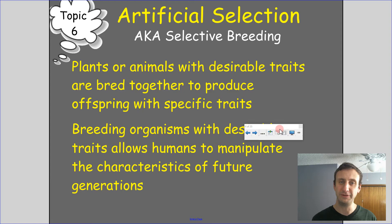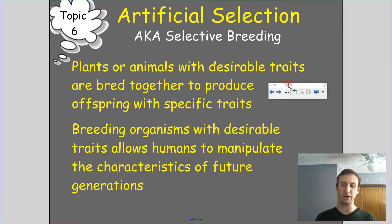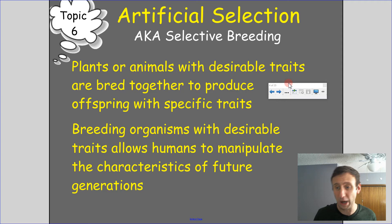We also call this selective breeding or artificial selection — plants or animals with desirable traits are bred together to produce offspring with specific traits. Breeding organisms with desirable traits allows humans to manipulate the characteristics of future generations. Why do we call it artificial? Because it's humans doing it — we're forcing it.